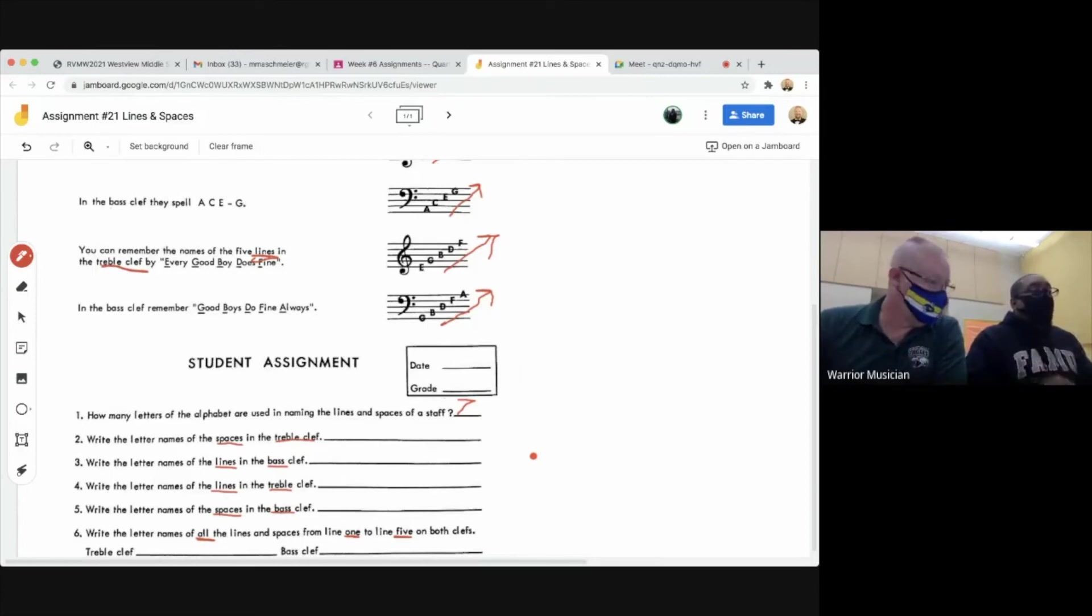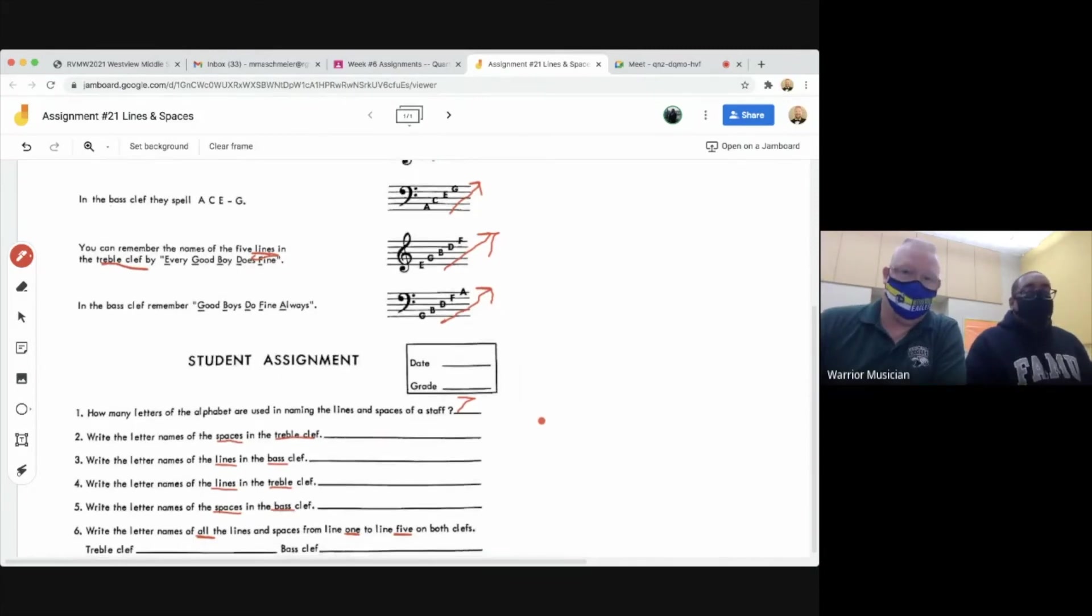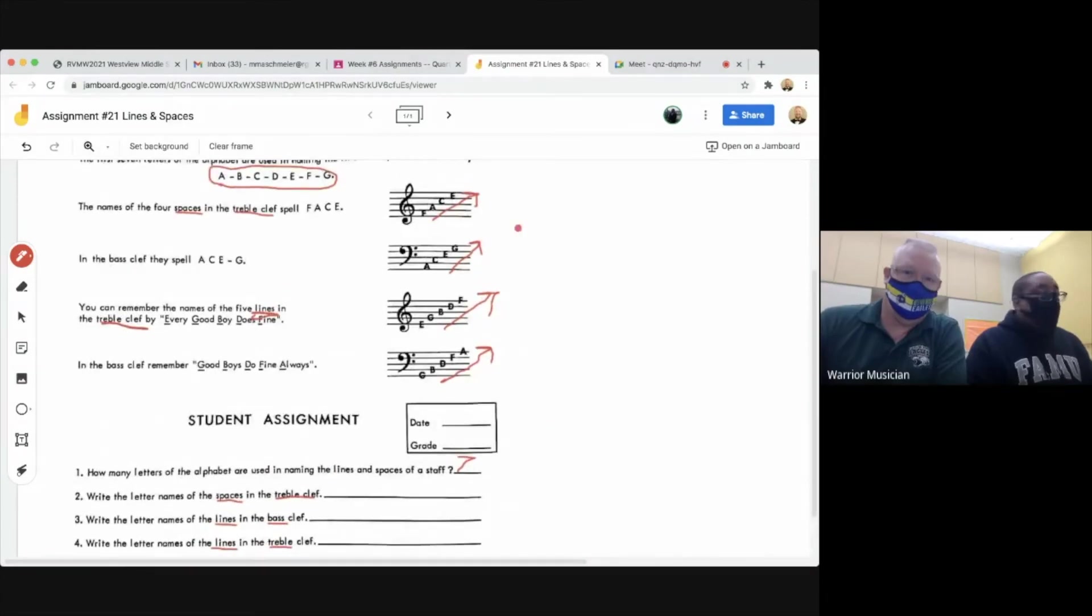Now, who can tell me the placement of the letter names for the spaces for a treble clef? What word does it spell? Come on. Spaces of the treble clef. What word is spelled? It's a four-letter word. What is it? Space. Space in the space.